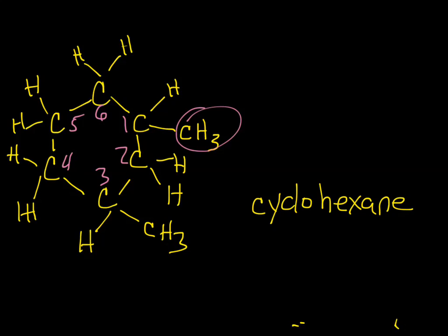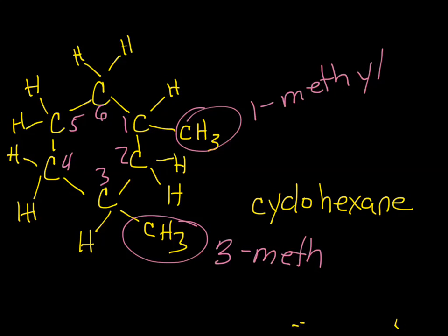So we'll name this guy here. This branch has one carbon, and he's on the number one carbon, so he's one meth. For one carbon, it's a branch, so it's a methyl. And this branch here also has one carbon. He's on carbon number three. He's also a meth. And branch, which makes him a methyl.